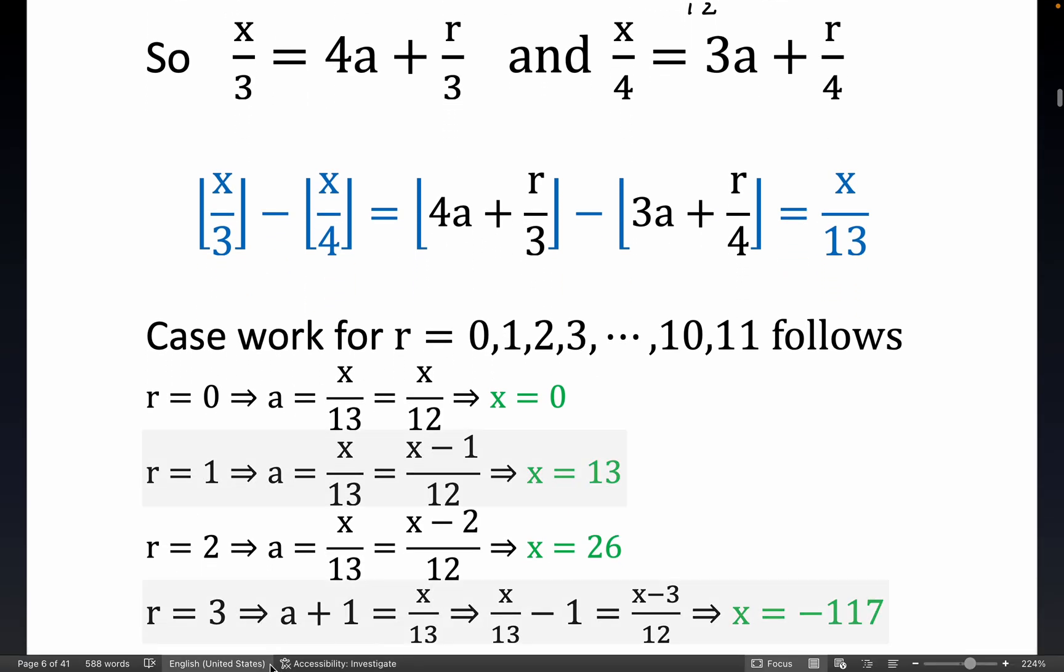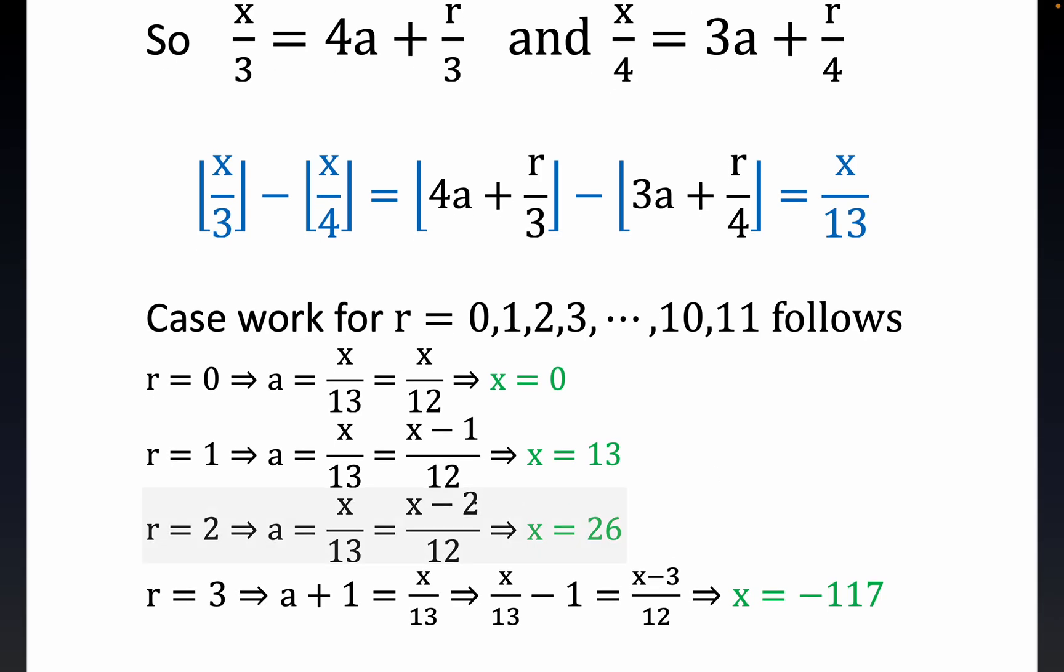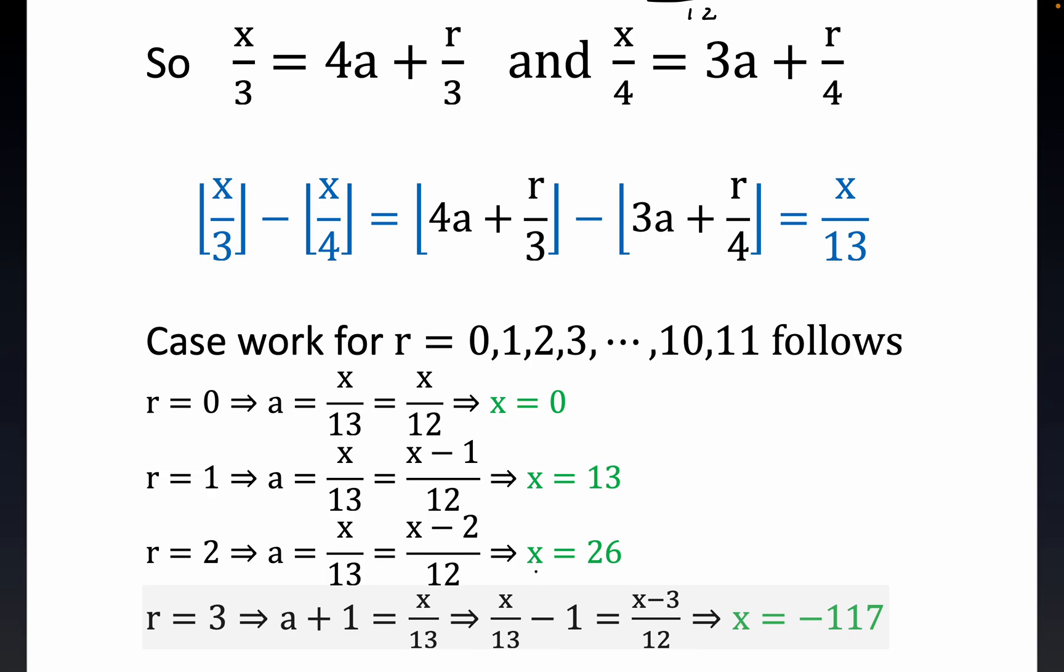And now something similar happens for two, and I want to spend just a little bit of time on three to make sure I'm being clear about this, because I didn't try to write all this out every time. We end up getting a plus one here, and you probably can see why when r is three. Notice you would get 4a plus three over three, which is just 4a plus one with the floor brackets removed, because again, when r is three, you just got an integer inside of here, and the floor of any integer is just the integer back.